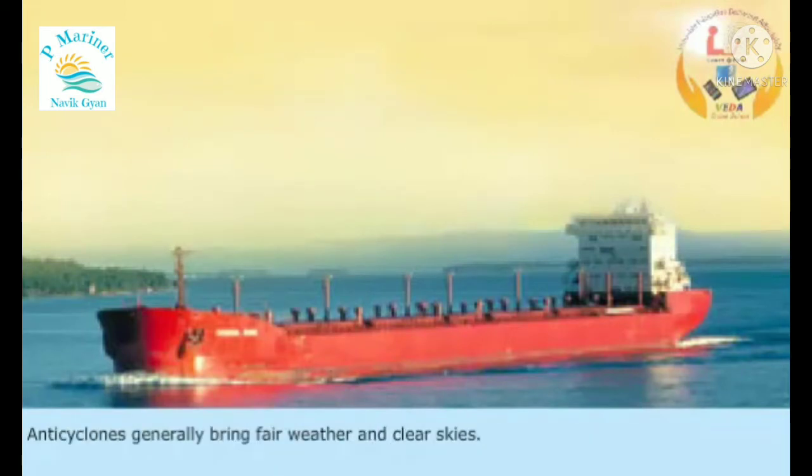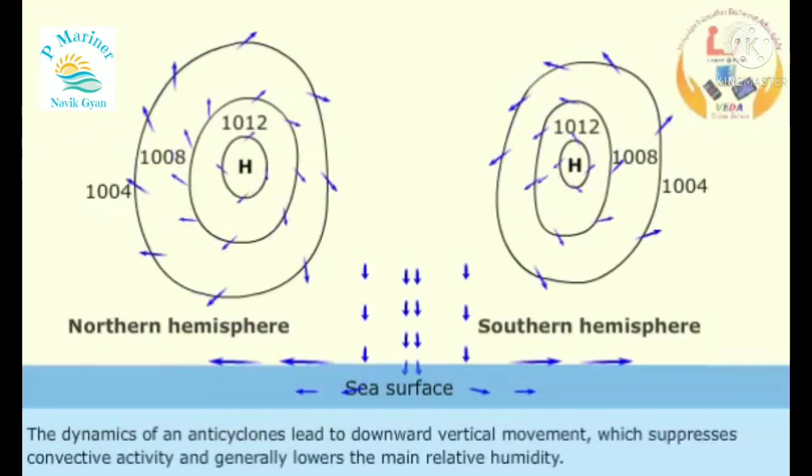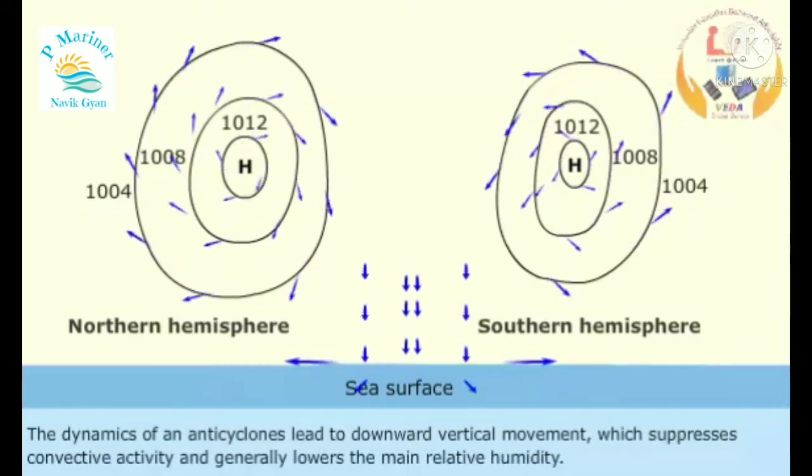Anticyclones generally bring fair weather and clear skies. The dynamics of an anticyclone lead to downward vertical movement, which suppresses convective activity and generally lowers the mean relative humidity.